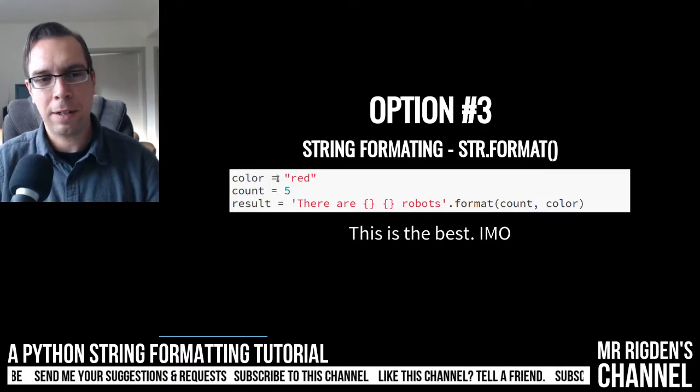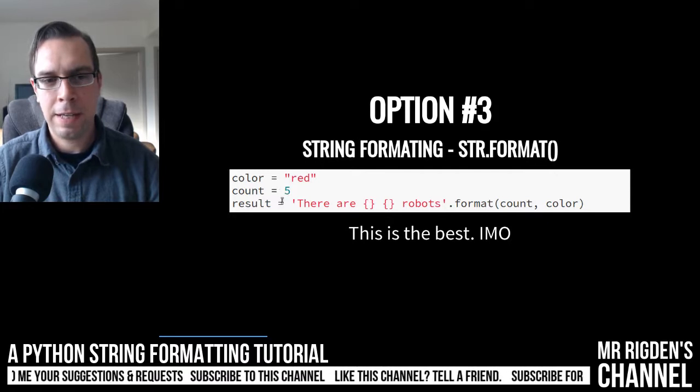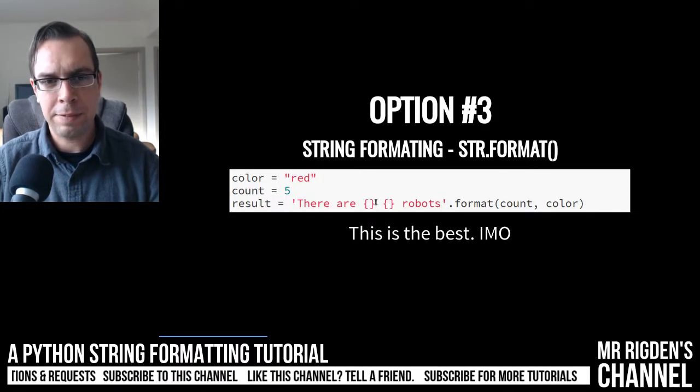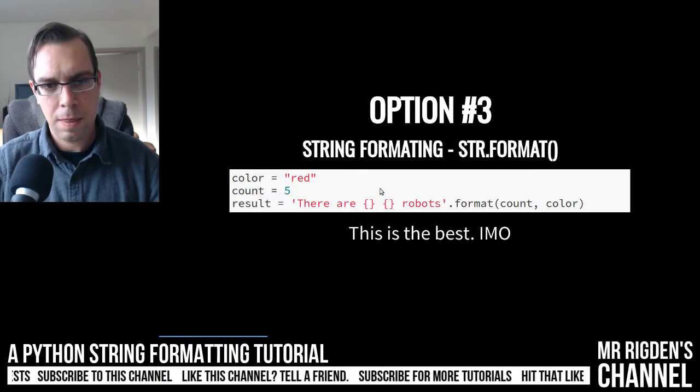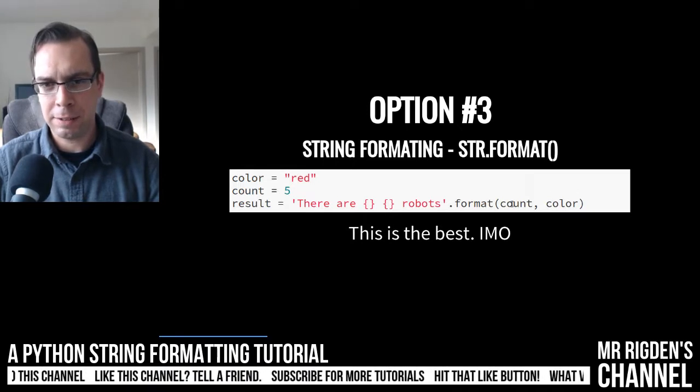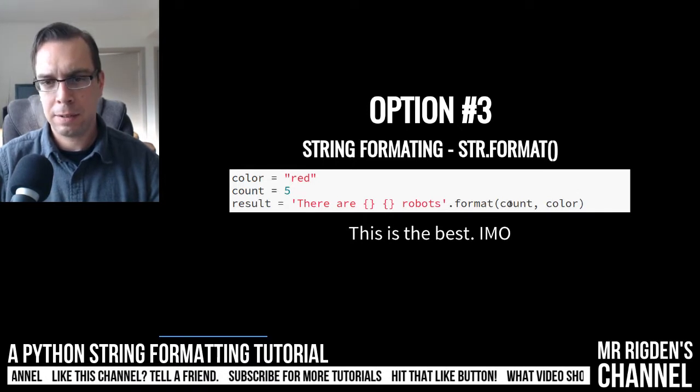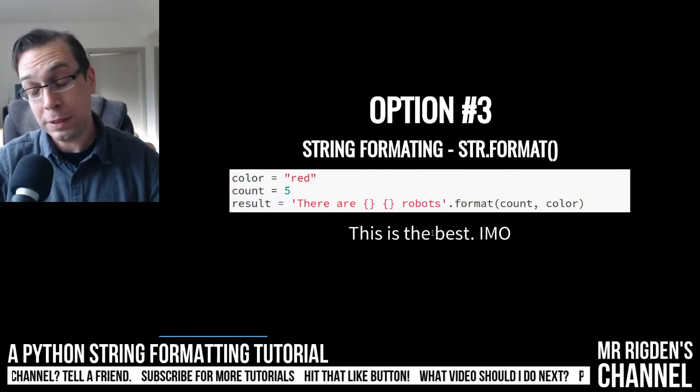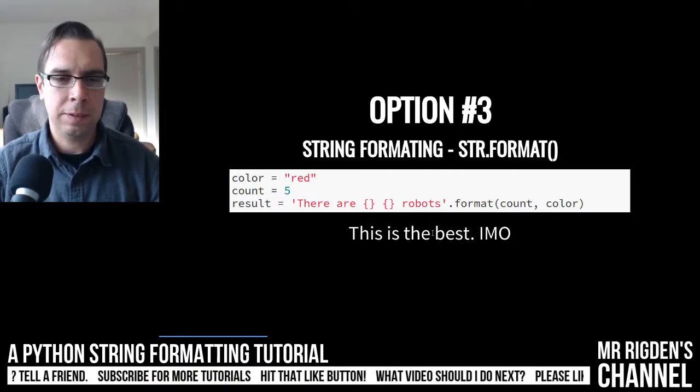Okay, so we've got our color red, our count five, and here we go. So basically, we've got our string here and we just have these brackets replacing the variables. How nice and short it is. And then down here, we've got a nice little function where we say count and color. I think it's nice, concise, and as you will see, there are a lot of interesting little tricks you can do.